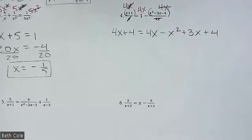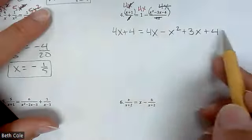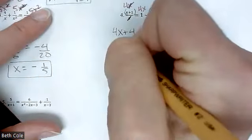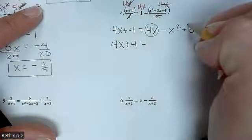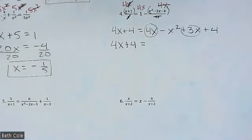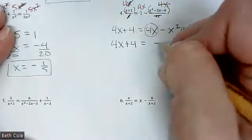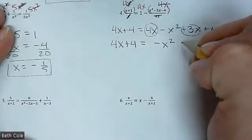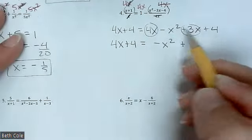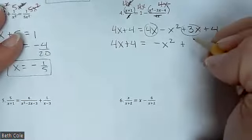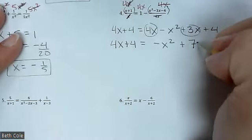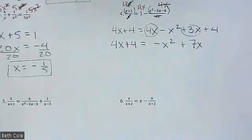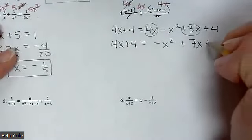Now I need to condense this down. Do we see any like terms that can go together on this side? It's kind of long. Four X and three X go together. I prefer to write it in descending order, so negative X squared, and then four X and three X gives seven X. The negative canceled out, and then plus four.